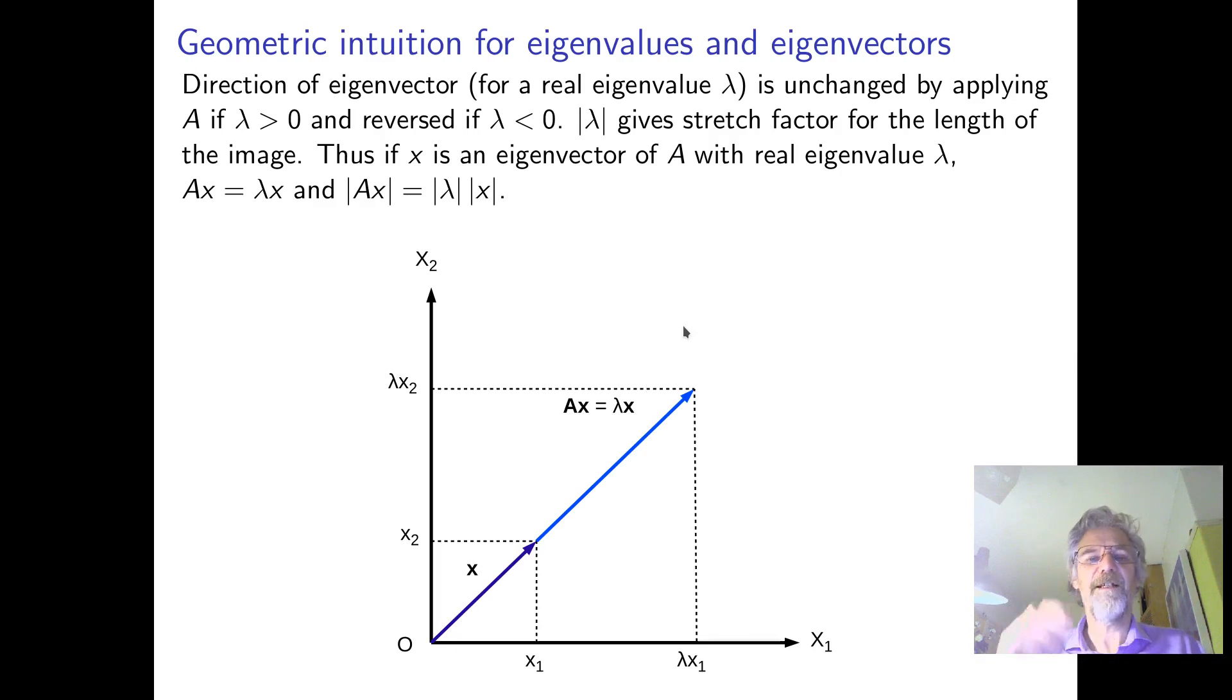So eigen comes from the German word, but that's just the definition, Ax equals Lambda x. And we've got to have x non-zero for it to make any sense, although it's not interesting, because multiplied by zero, you always get zero. And if Lambda was positive, it's making that vector bigger, and if Lambda's negative, it's making it smaller. And for the moment, we're thinking of Lambda as being a real number.